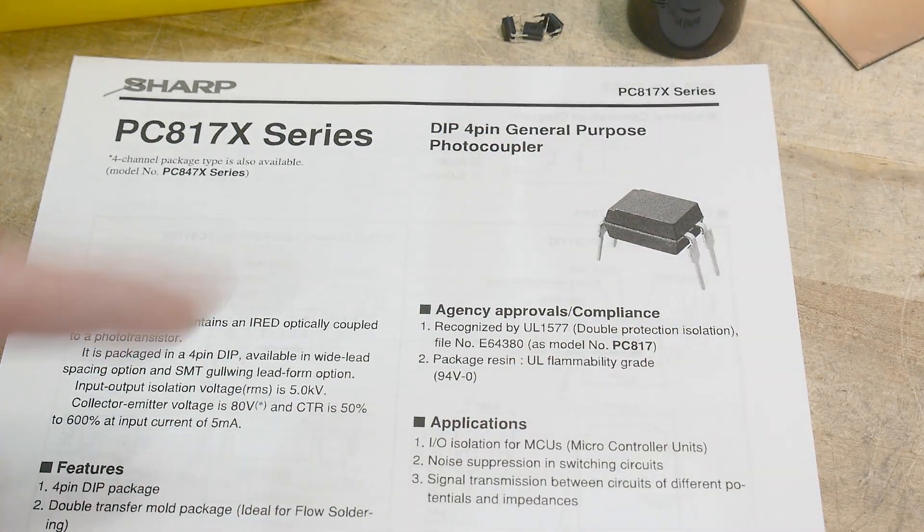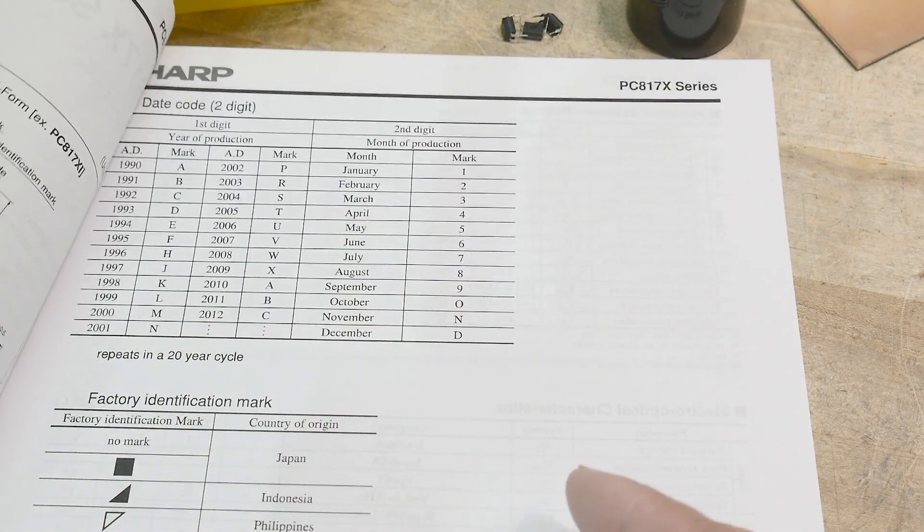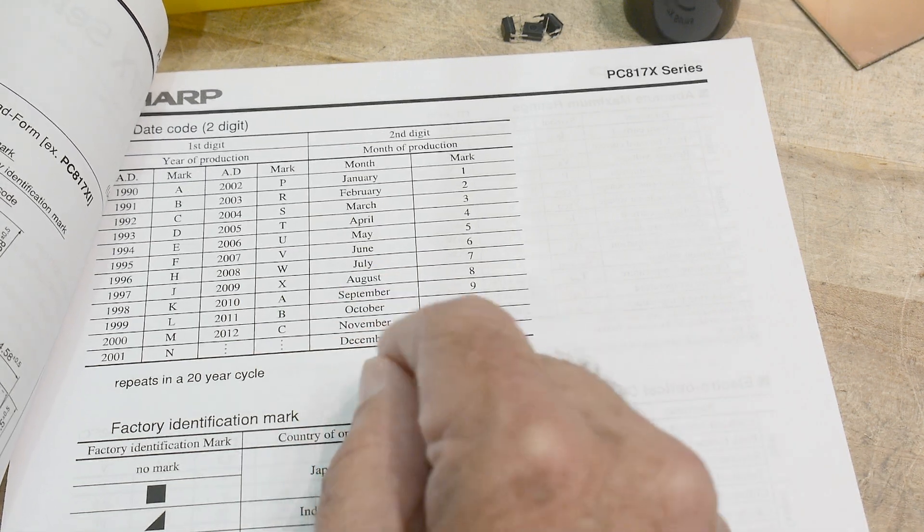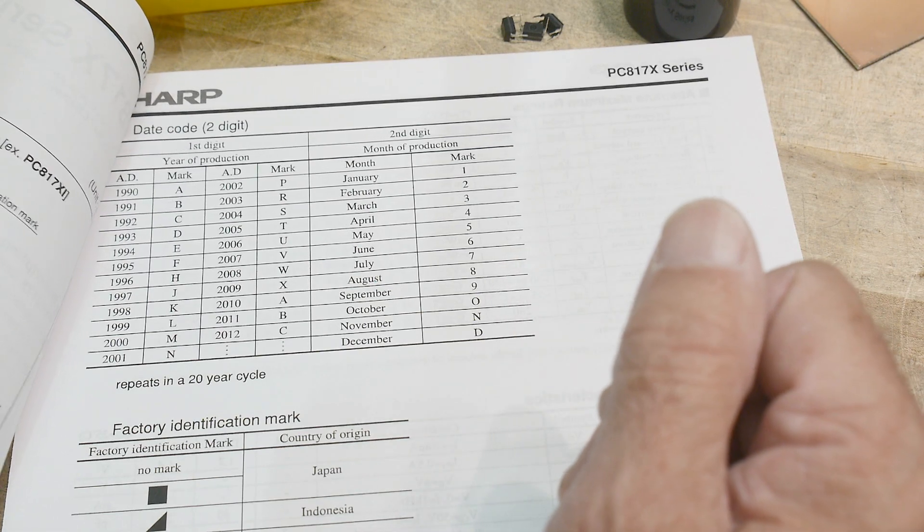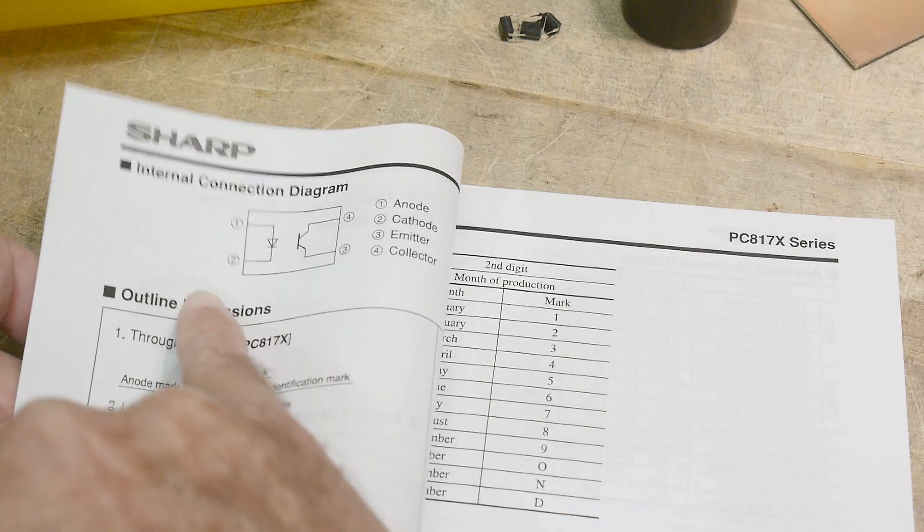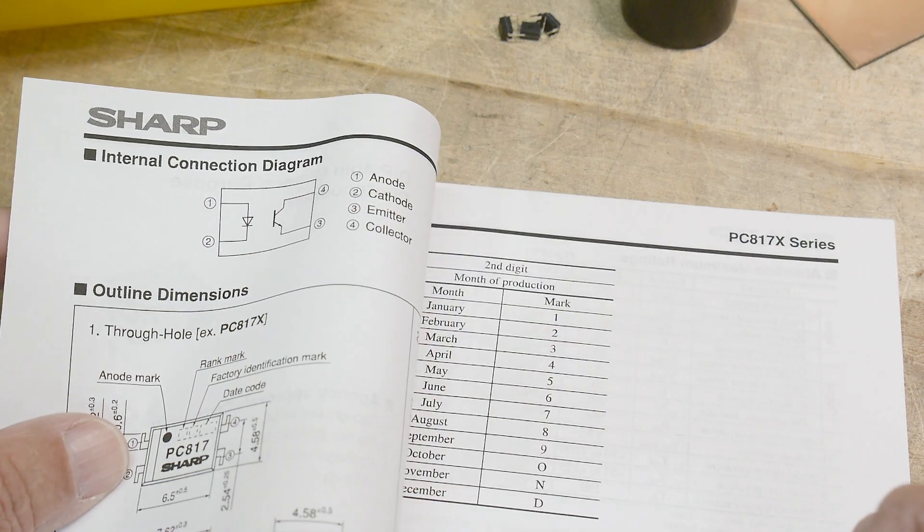And we could probably sweep this one and see what kind of forward voltage it has. Not that it turns on all the way, but the knee, right where it starts to turn on, that's when it would start to feed back, is around a volt. This is what they look like inside. The four pins is all you need. You got your LED, and you got your phototransistor, and that's all you need.